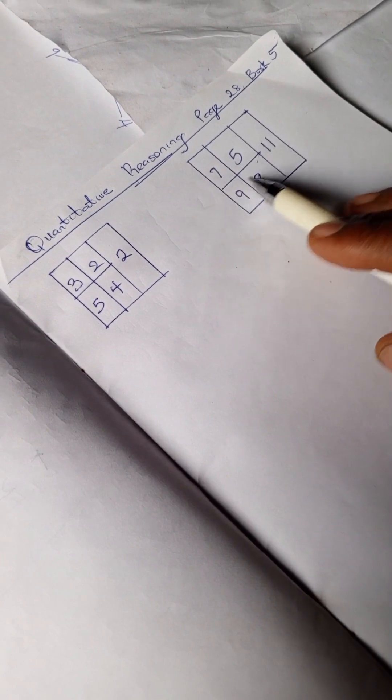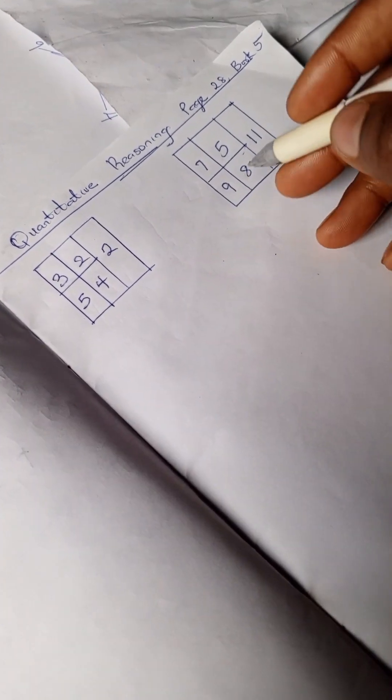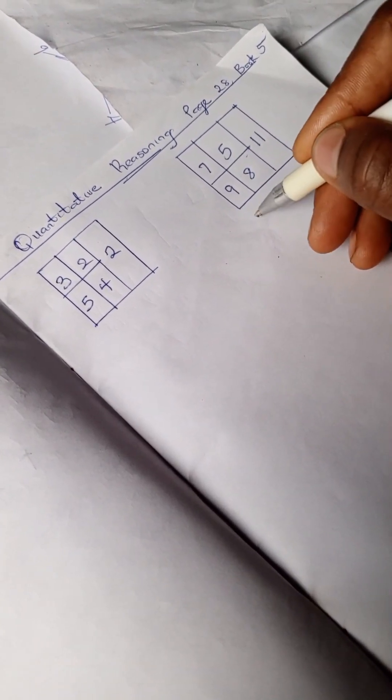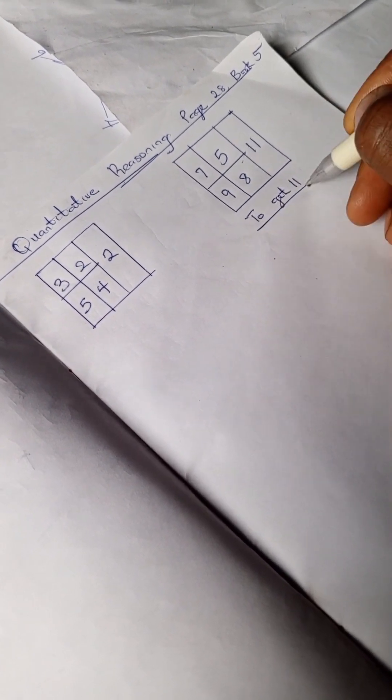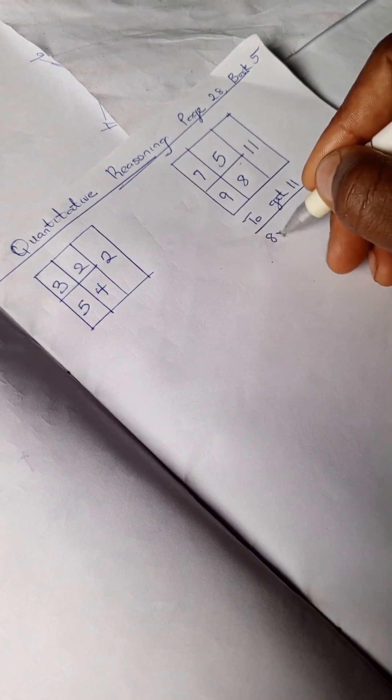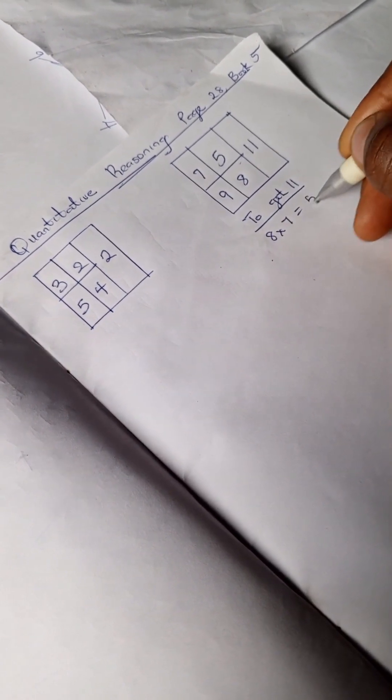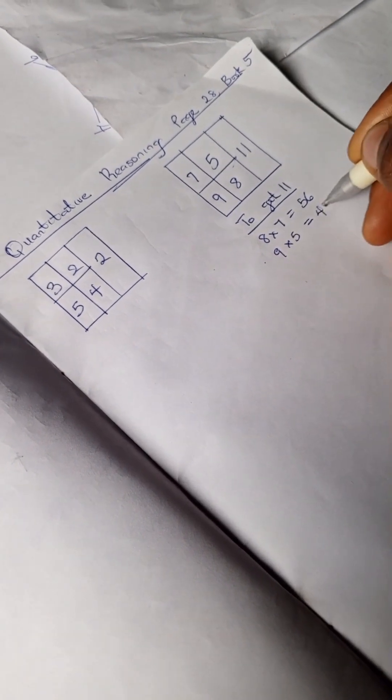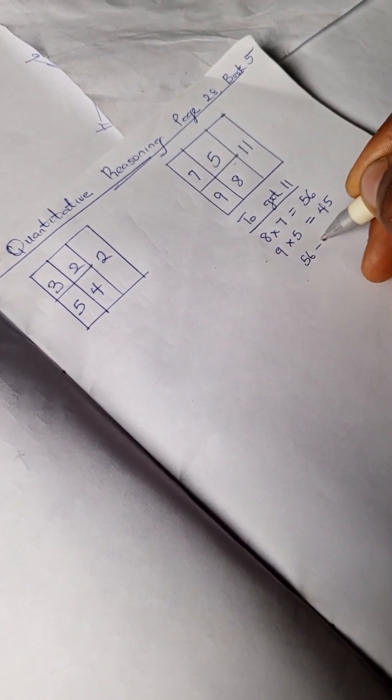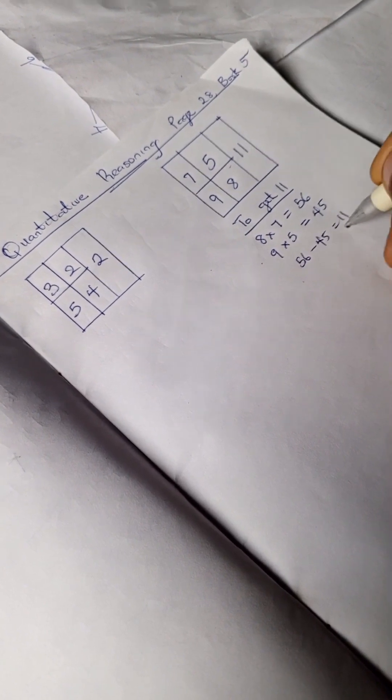As you can see, it worked, so we can work with this. Let's use this as an example. We have to get 11, so we have 8 times 7 is 56, and 9 times 5 is 45, so 56 minus 45 is our 11.